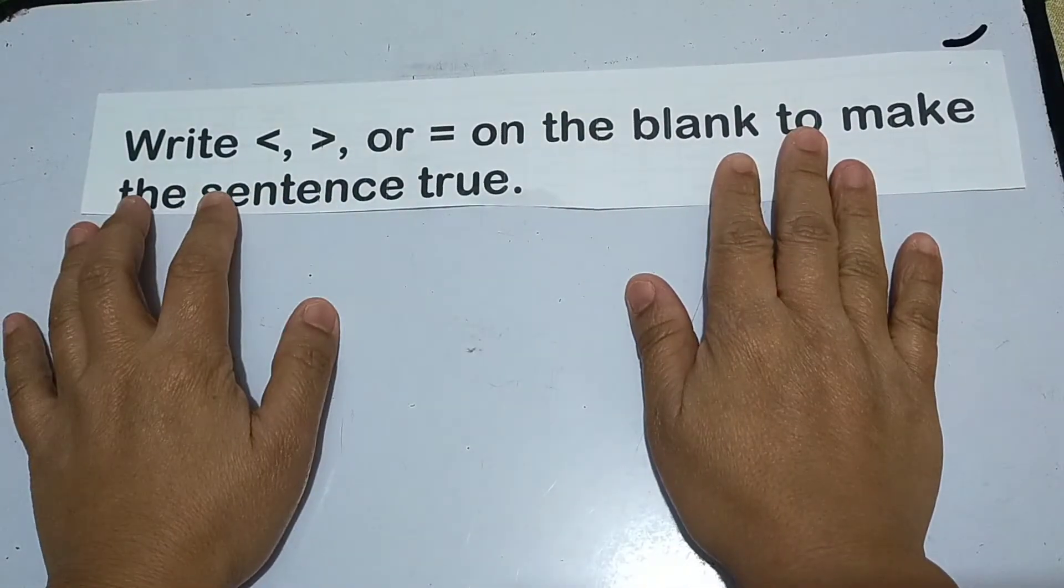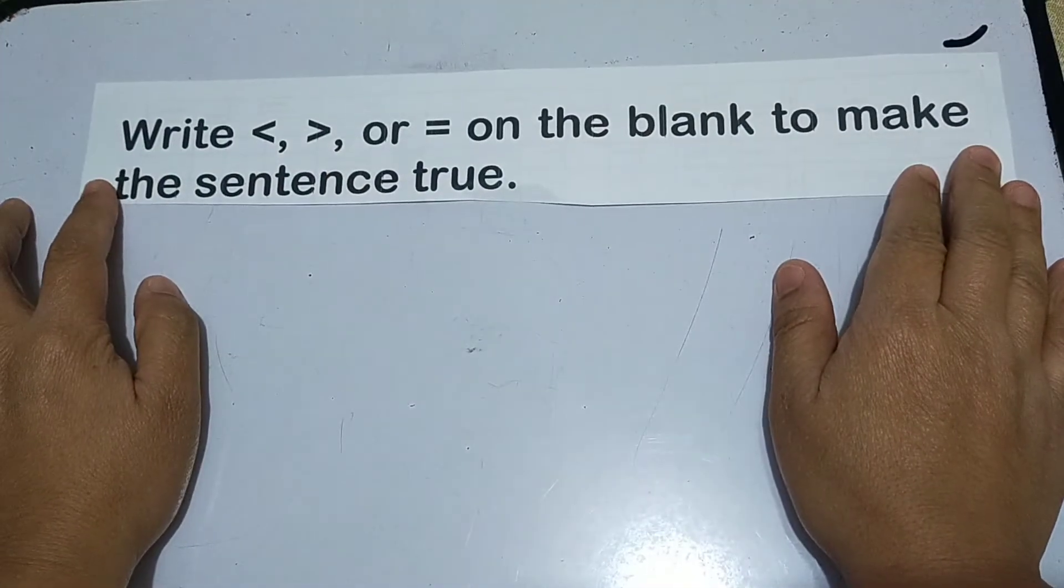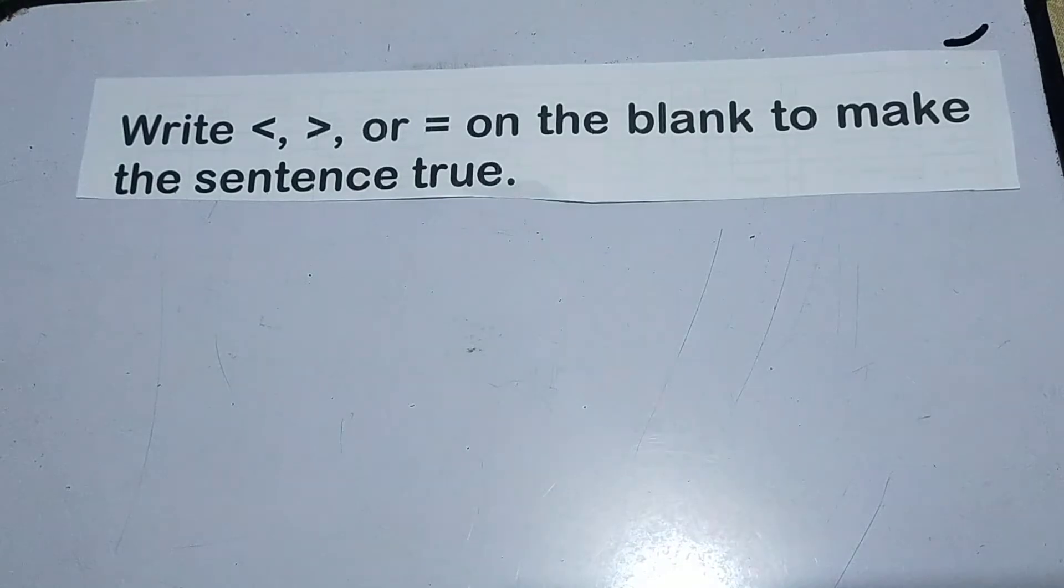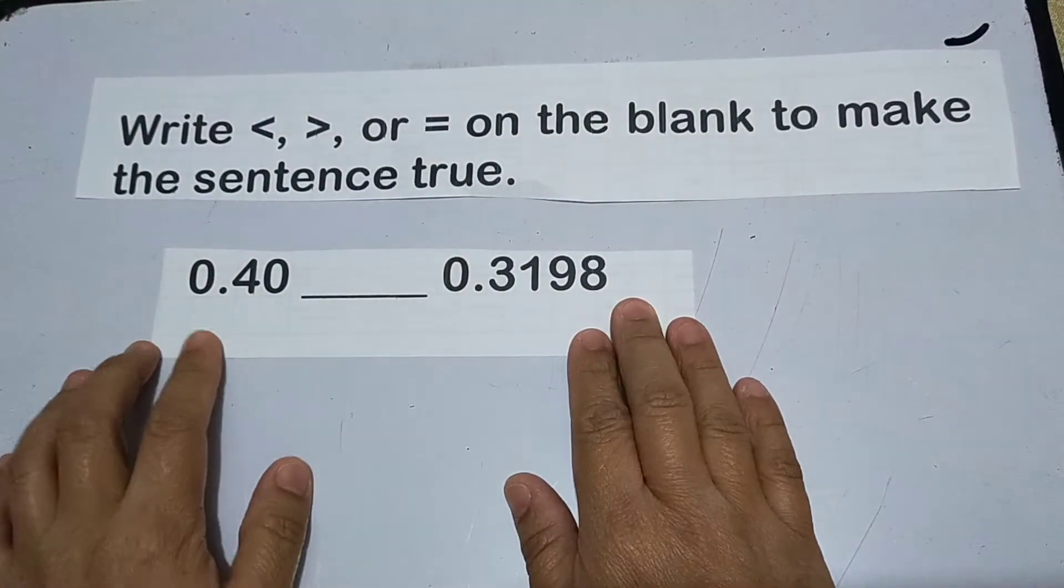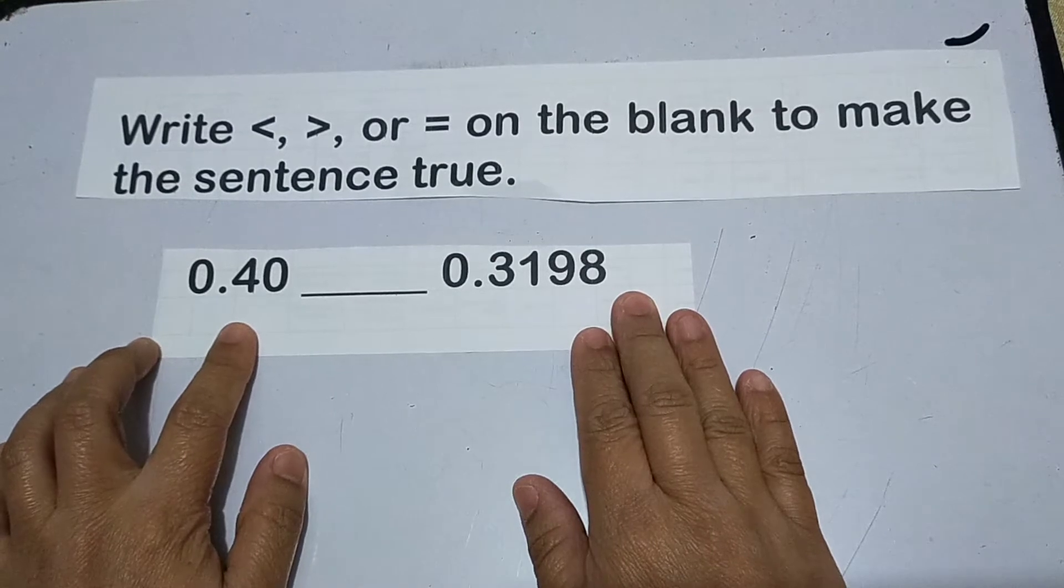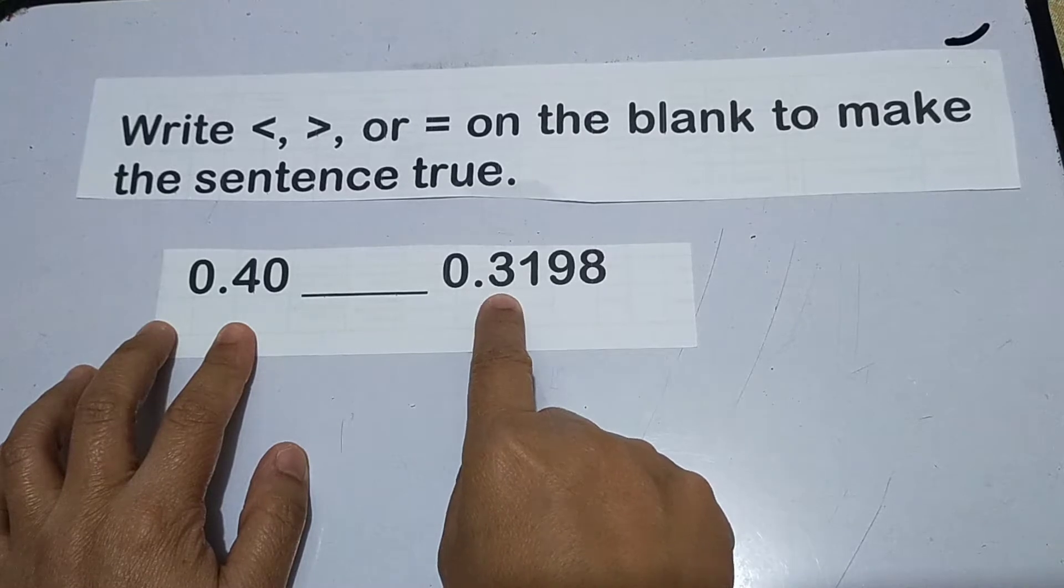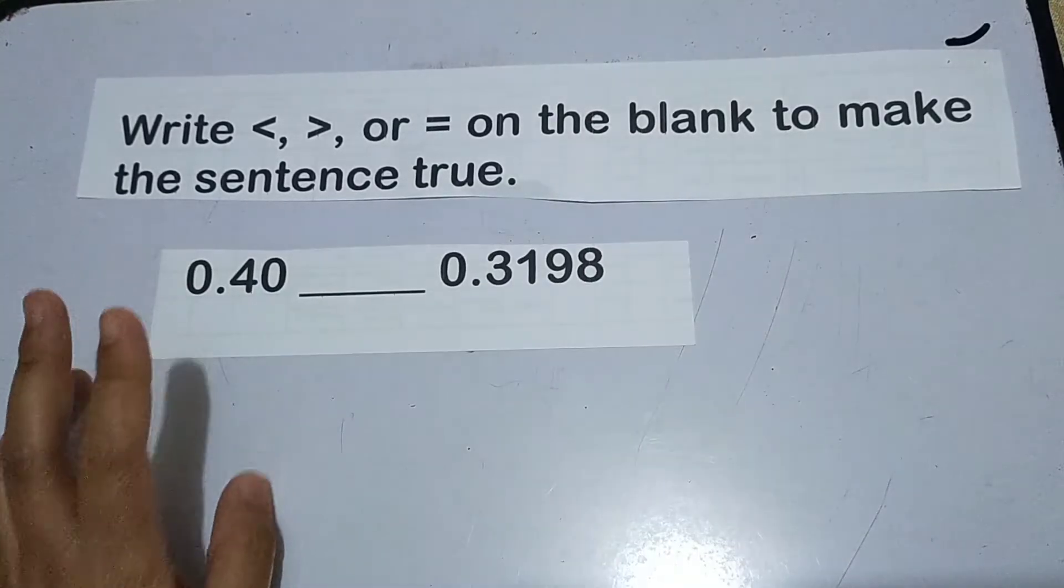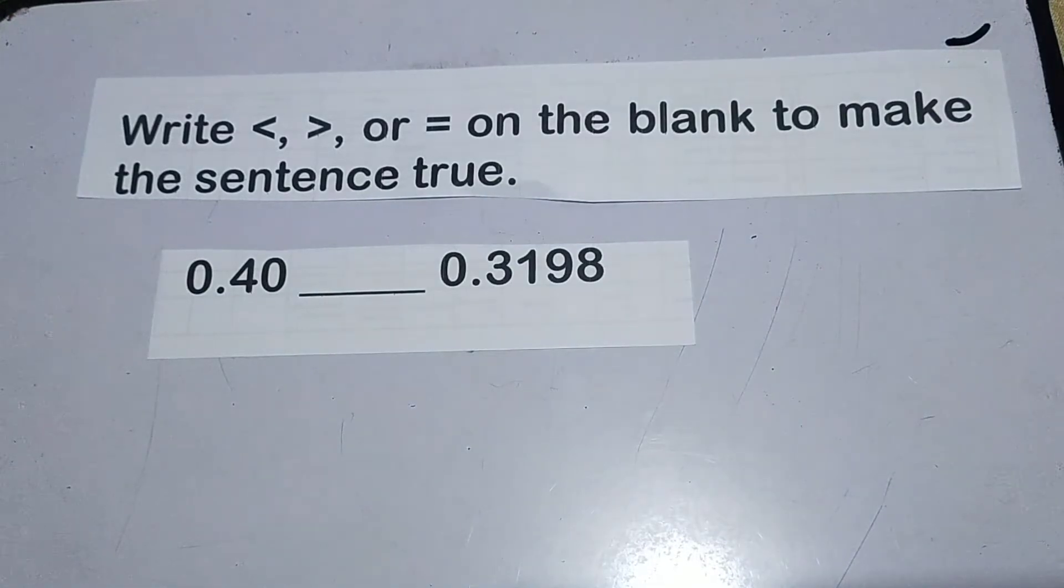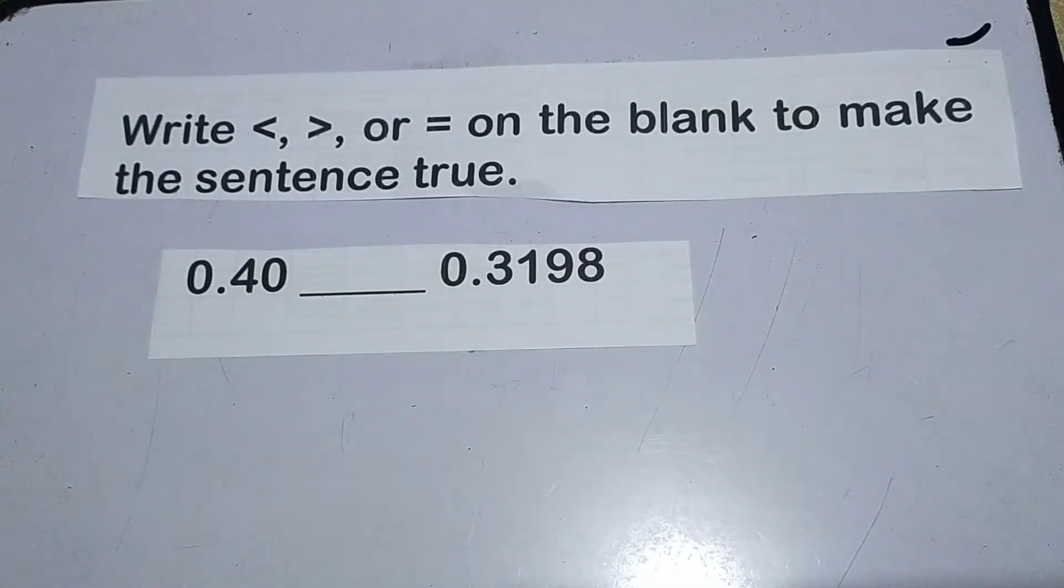Write less than, greater than, or equal on the blank to make the sentence true. Alright, so let's say this one. 40 hundredths compared to 3,198 ten thousandths. As you can see,